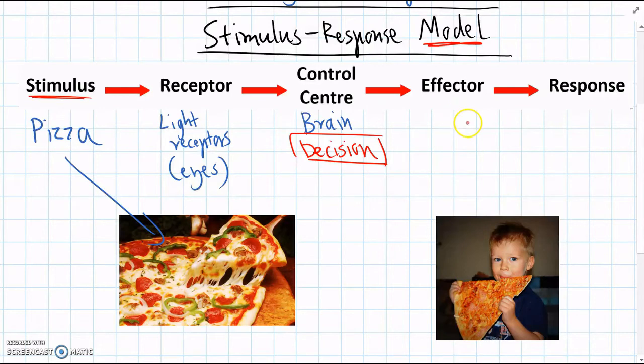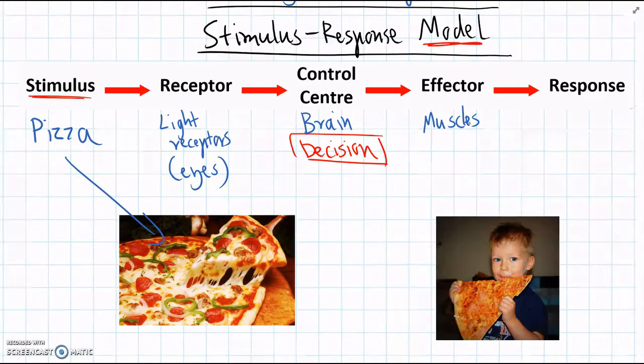The next step is there's some sort of effector, which is something that causes something to happen in the animal. So in this example, the muscles will be the effector, because you need to move your hands and your mouth to be able to pick up the pizza and eat it. So the control centre sends some sort of message to tell the muscles to start moving, and that causes our response.